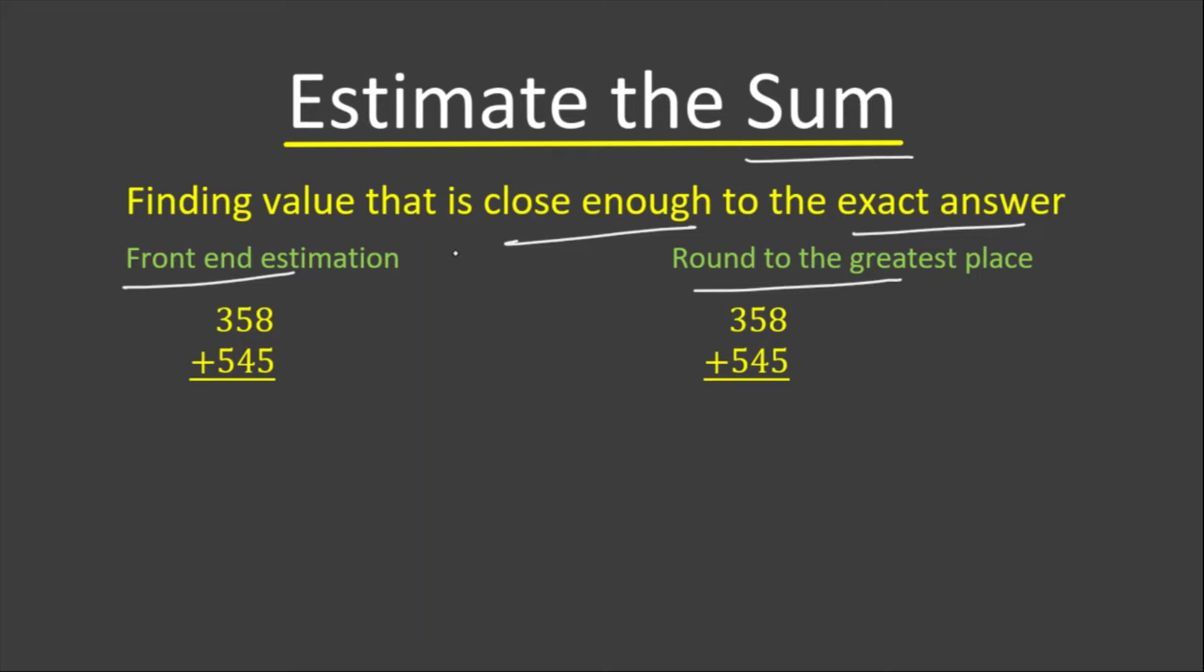we estimate by adding only the front digits. The front digit in the given problem over here is 3 and 5. So we write only the front digit with its value. The front digit is 3, so the value of 3 in that place is 300. The front digit in the bottom number is 5, and the value of 5 in that place is 500. When we add, we get 800. It means 800 is the estimated answer, an answer which is close enough to the exact answer, but it is not the exact answer to our problem.